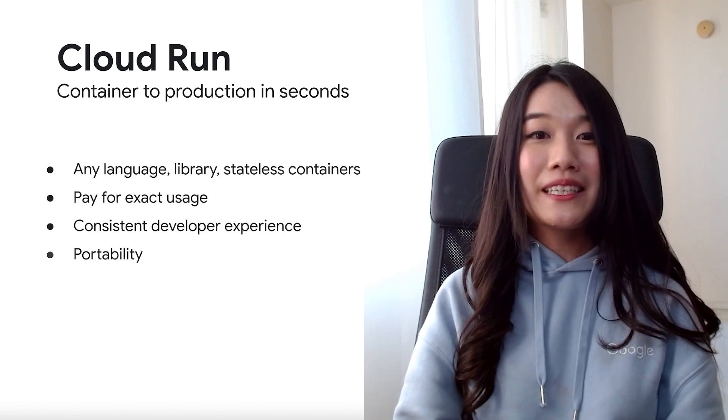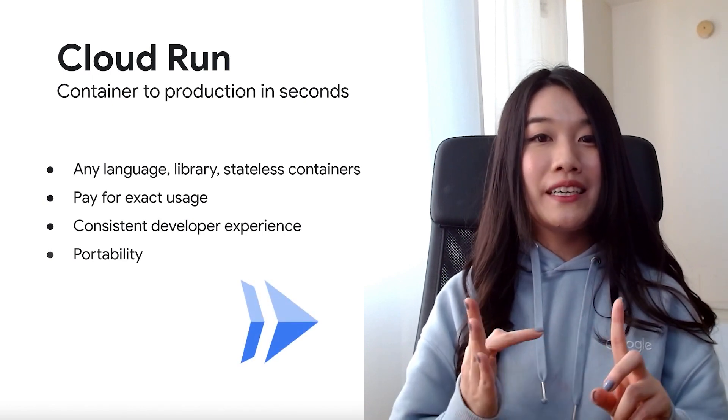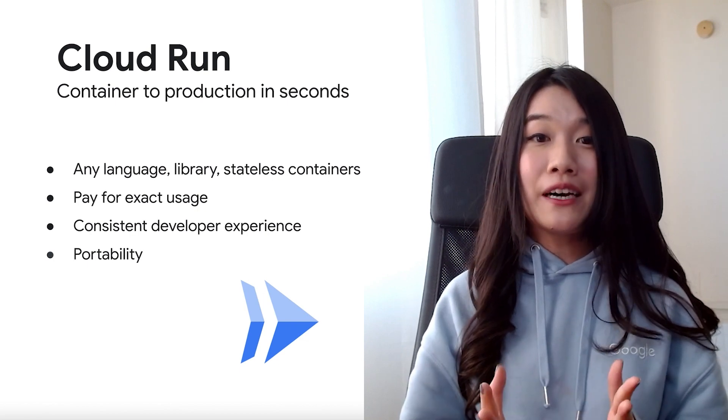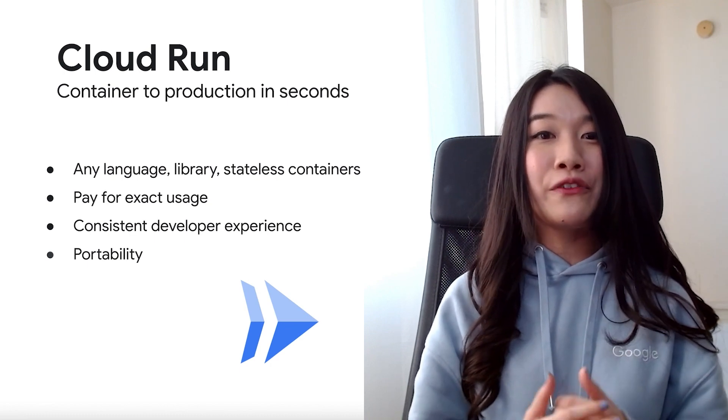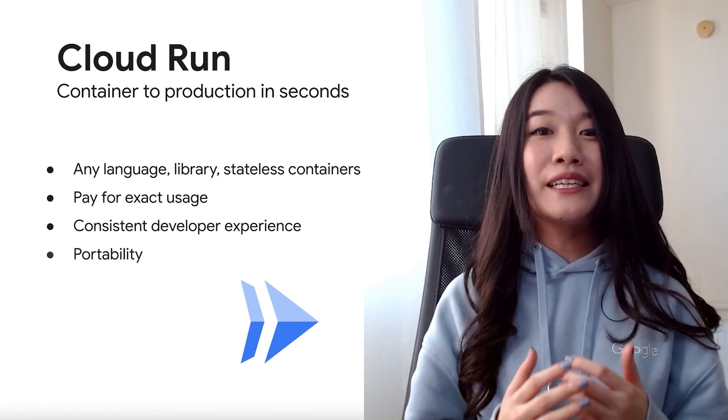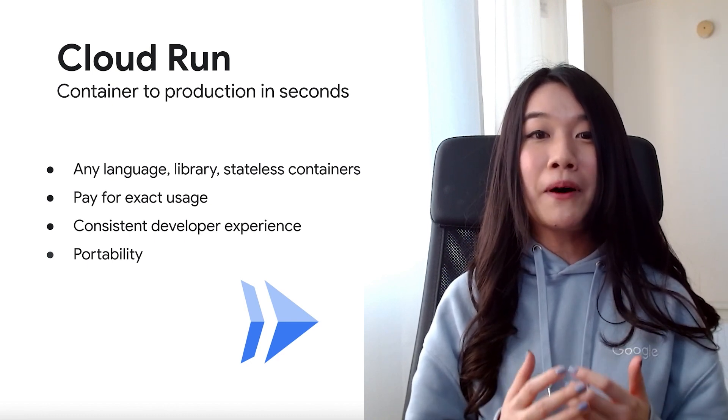Now we're going to zoom into the latest addition as well as a very popular one, which is Cloud Run. Cloud Run enables you to run your containerized applications on a managed compute platform quickly and securely, bringing you from containers to production within seconds. Write your code your way using your favorite languages such as Python, Ruby, Go, and many more. With Cloud Run, you only have to pay for the resources that your startup consumes, which means that you won't have to pay for over-provisioned resources. Cloud Run is also built upon the open standard Knative, which ensures the portability of your applications. All of the above allows you to build your applications the way you want to.